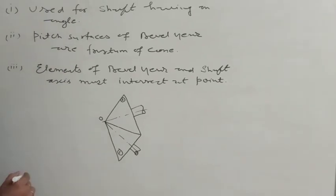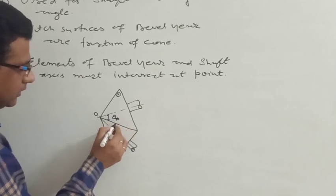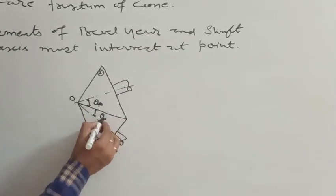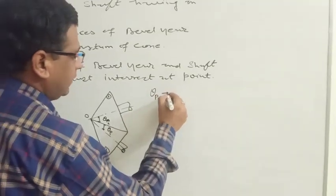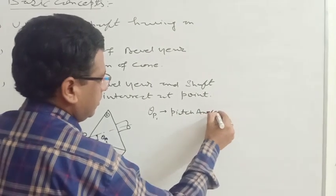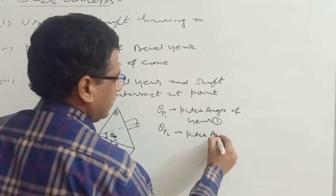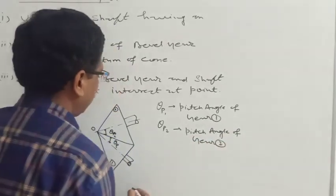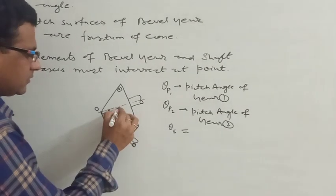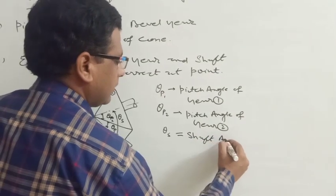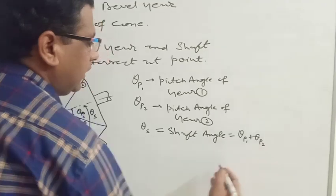This is the required condition for bevel gears. Considering the angles: this angle is the pitch angle θP1 for gear one, and this angle is θP2 for gear two. The total angle between the two shafts is θS, known as the shaft angle. From the figure, it is clear that θS = θP1 + θP2.